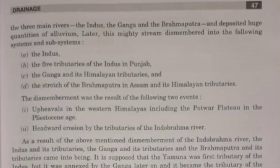This dismemberment was caused due to the following factors: the upliftment of the western Himalayas, including the Punjab Himalayas, and also the Potwar Plateau, which is in Pakistan. Another cause was headward erosion, which means the erosion that occurs at the source of the river, going backward. Those were the reasons for the dismemberment of this mighty river.